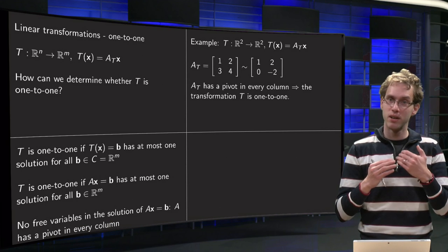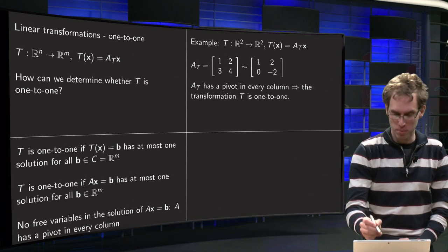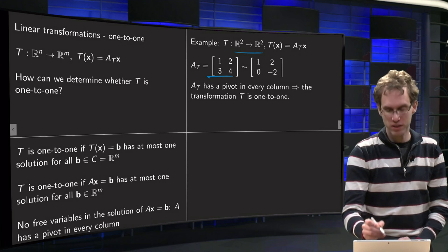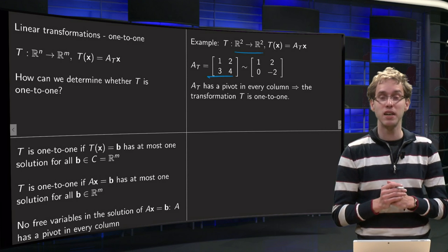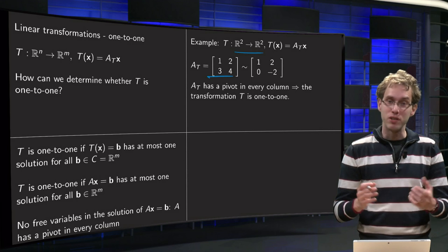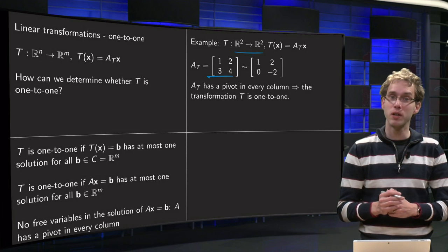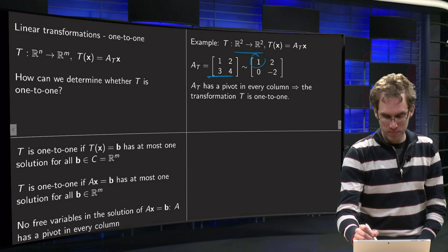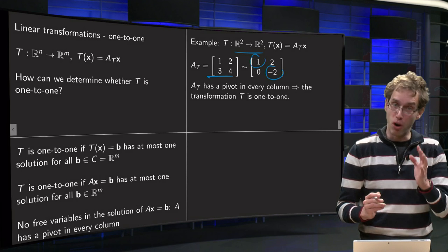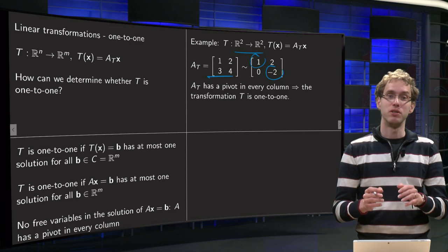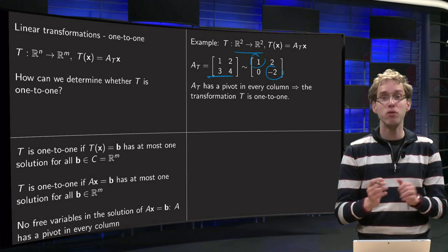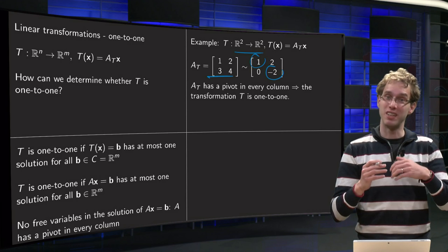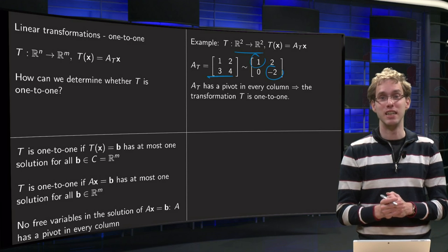So take an example, T from R2 to R2 given by matrix A, T of x equals A times x. How can we see whether our transformation T is 1 to 1? Well we do one row reduction step, we see we have two pivots, every column has a pivot, which means that we have no free variables, which means that our transformation T is 1 to 1.